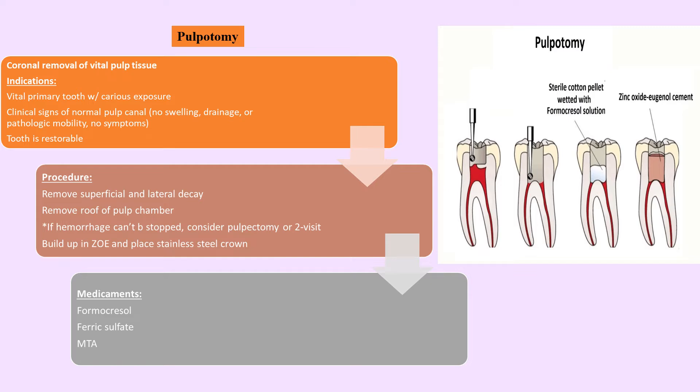In pulpotomy you are removing the portion of the coronal pulp using a slow-speed revolving round bur or a spoon excavator. It is done on a vital primary tooth. After removal you apply formocresol-dipped cotton pellet or ferric sulfate on the pulp stump, then place ZOE over it to prevent the tooth from becoming non-vital. Indications: vital primary tooth with carious exposure, signs of normal pulp, no periapical radiolucency, no swelling, no drainage, and no pathological mobility.